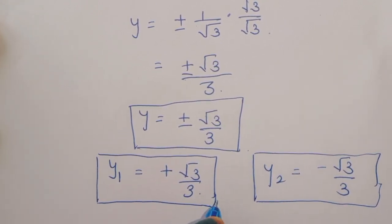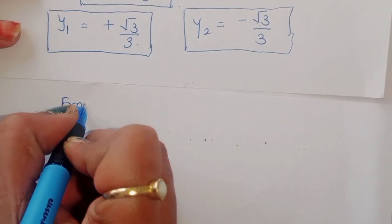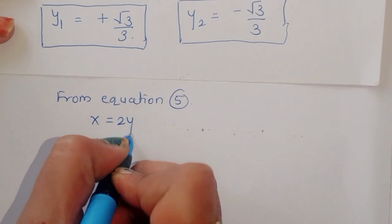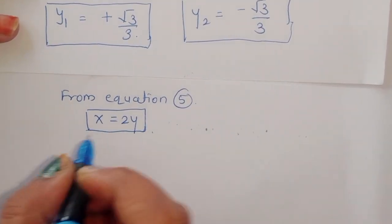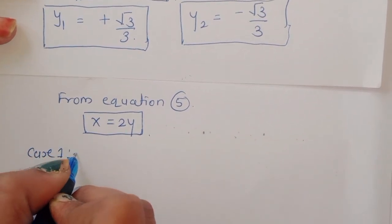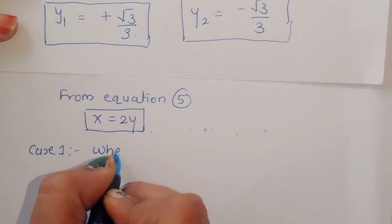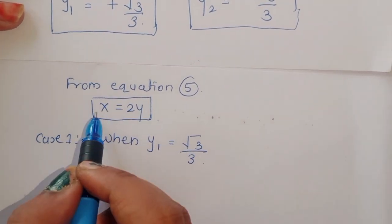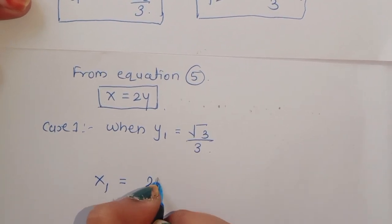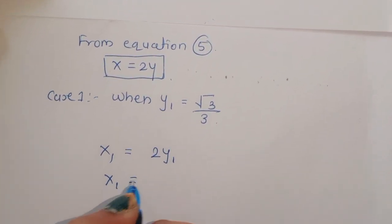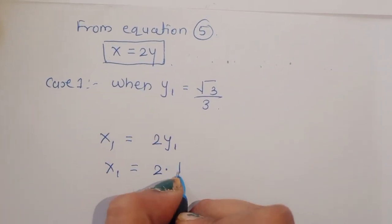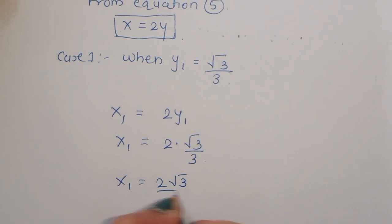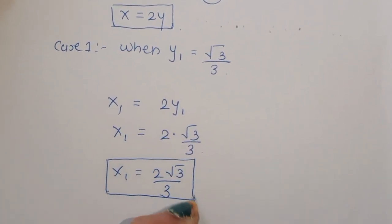Now we find x1 and x2 using equation 5: x equals 2y. In case 1, when y1 equals square root of 3 over 3, then x1 equals 2 times y1, which gives x1 equals 2 square root of 3 divided by 3.